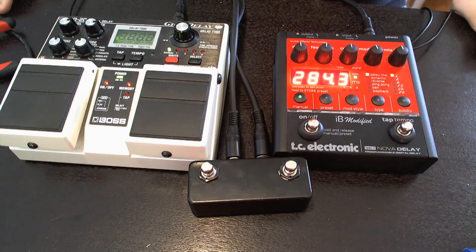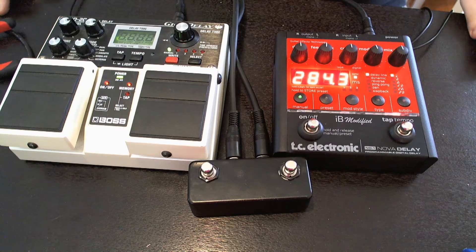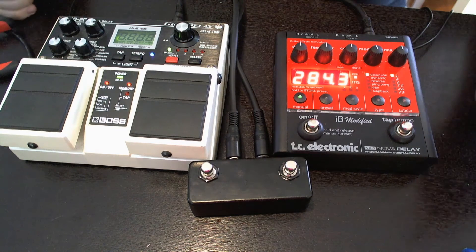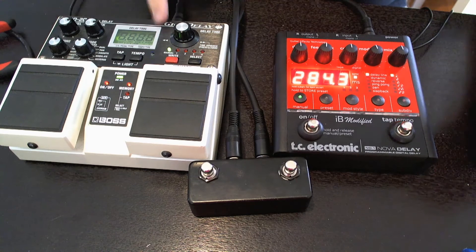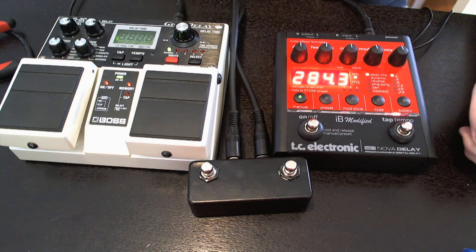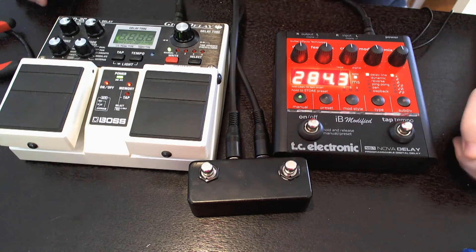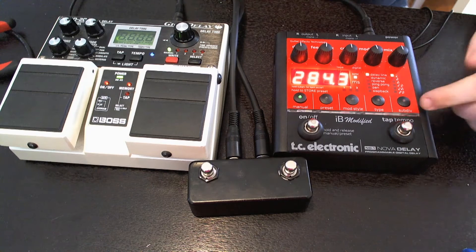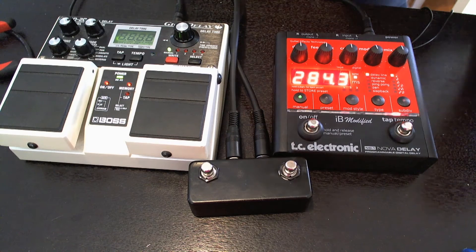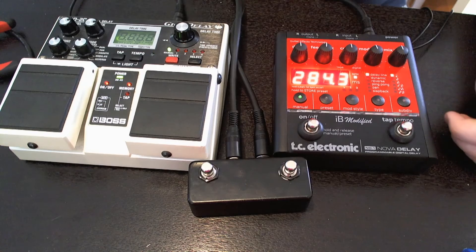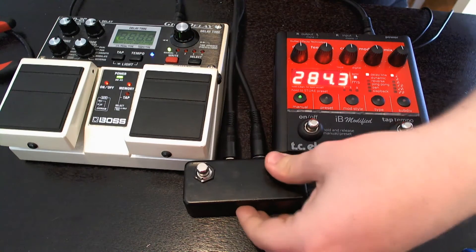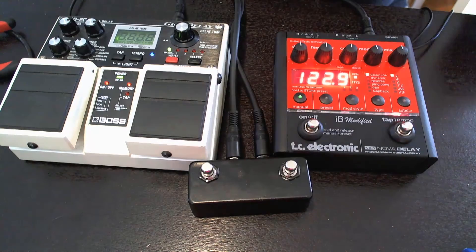So just to take a look at how the tap tempo works out. So we've got a Boss DD20 here and we've got a Nova Delay here. This light indicates the tempo for the DD20 which is at 128 and we have the tempo for the Nova Delay which is currently at 284. So if we just tap that in, now they're both, this one's at 131.